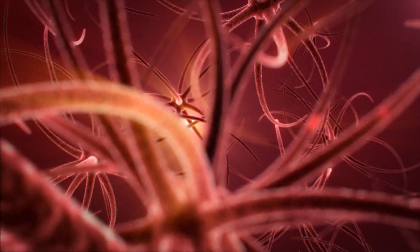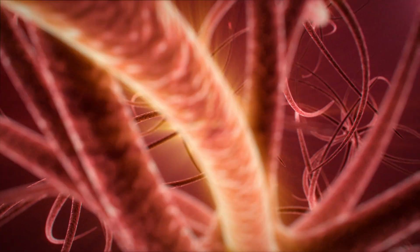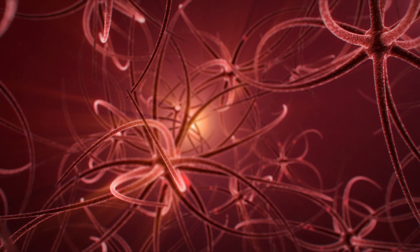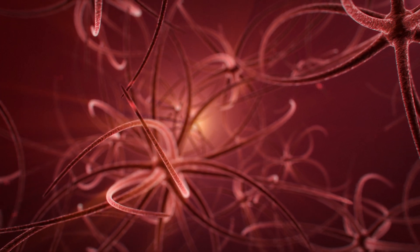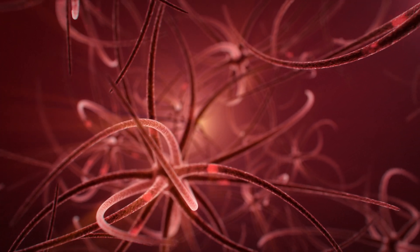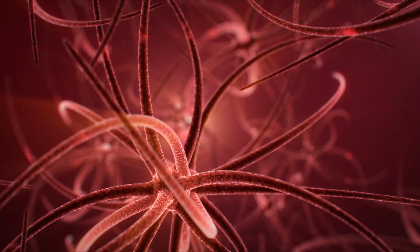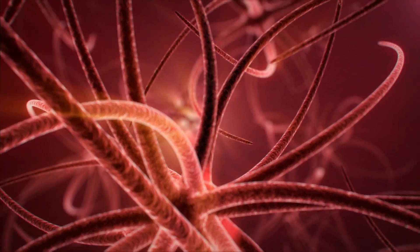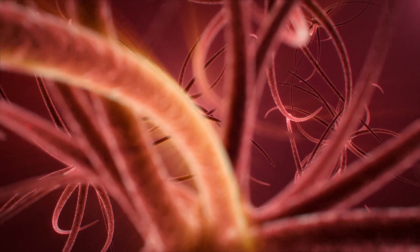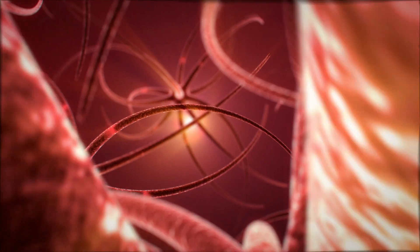The nervous system's intricate network of neurons and pathways allows for the efficient processing and response to internal and external stimuli, ensuring the body's proper functioning and adaptation to its environment.